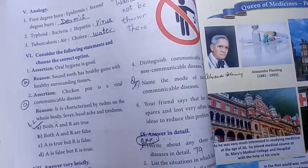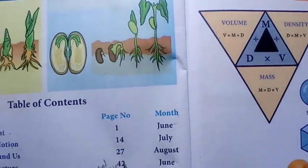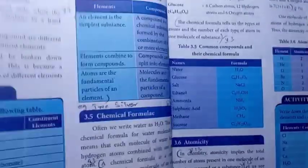Then Unit 4, page number 42. Atomic structure, page number 42, Unit 4 Atomic structure.